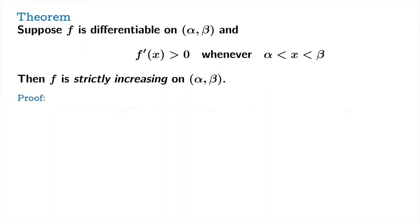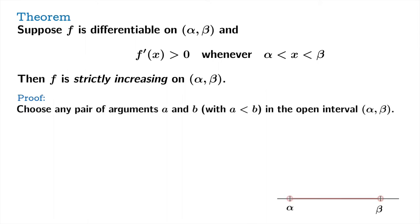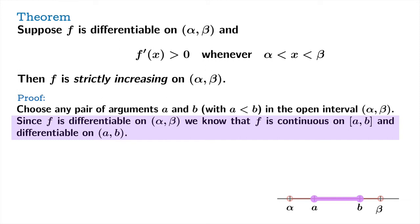Here's what the proof looks like. Choose any pair of arguments a and b inside the open interval with a being less than b. Now we're going to focus our attention on the closed interval from a to b. We know f is differentiable on the larger open interval and therefore continuous. So when you restrict your attention to the closed interval from a to b, you know it's continuous on the closed interval, and since it was differentiable on the original open interval, it'll be differentiable on this smaller open interval a to b. So everything restricts nicely.